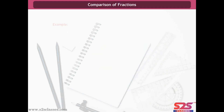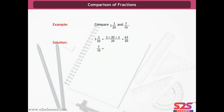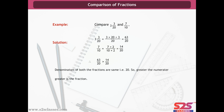Comparison of fractions. Compare 3 and 3/20 and 7/10. As shown in the animation, 3 and 3/20 equals (3 × 20 + 3)/20 = 63/20. And 7/10 equals (7 × 2)/(10 × 2) = 14/20. Since 63/20 is greater than 14/20, 3 and 3/20 is greater than 7/10.